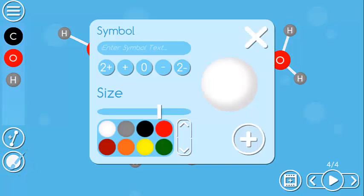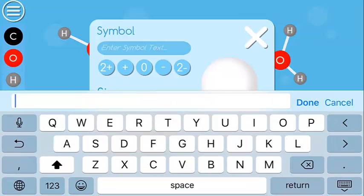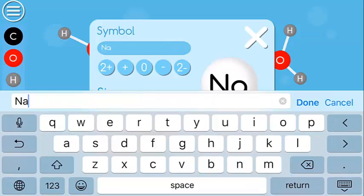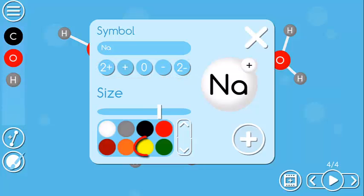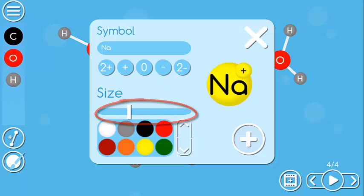The lower left paintbrush brings up the Particle Creator. I can type in the particle, add a charge, change the color, and then change the size.